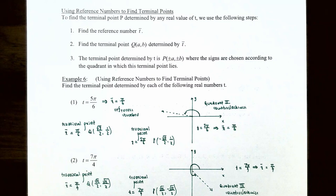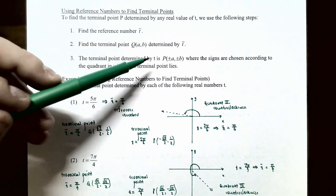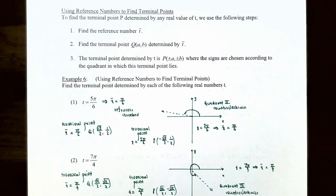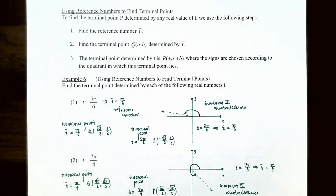To find a terminal point using reference numbers, follow three steps: Step 1, find the reference number t̄. Step 2, find the terminal point Q = (a, b) determined by t̄ (using the first-quadrant special values). Step 3, assign signs to a and b according to the quadrant in which the terminal point lies.